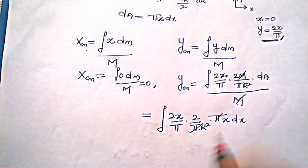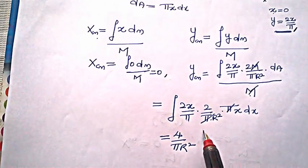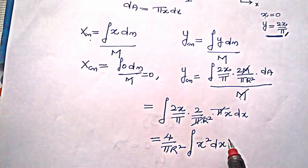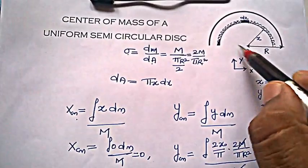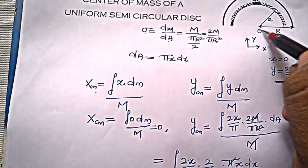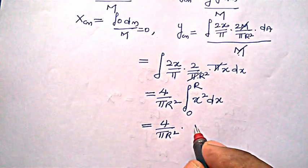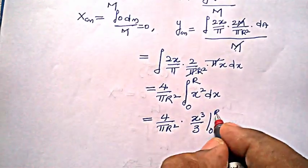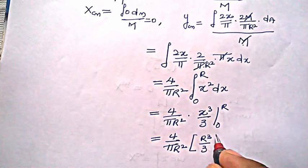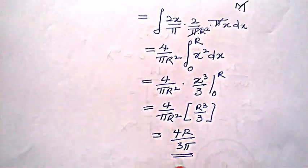After substituting dA = πx dx, the π cancels, leaving (4/πr²) ∫x² dx. The limits of integration are from 0 to r, covering the entire half disc. Integrating x² gives x³/3, so we get (4/πr²) · (r³/3). Cancelling r² leaves us with 4r/3π. So the final answer is ycm = 4r/3π.